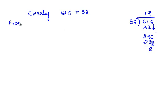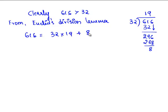Therefore, from Euclid's division lemma, 616 can be written as 32 times 19 plus 8. Since the remainder 8 is not equal to 0, we again apply Euclid's division lemma.